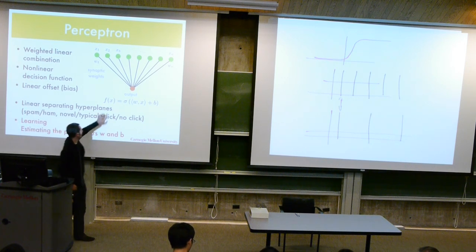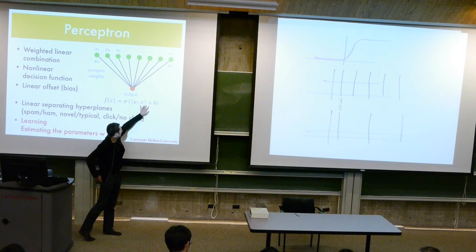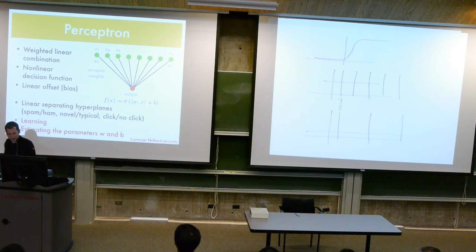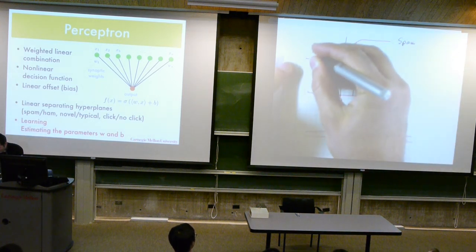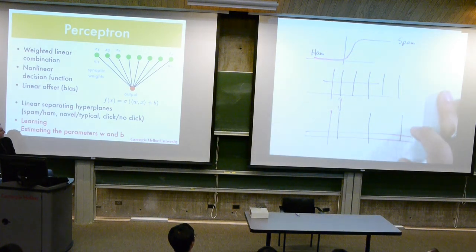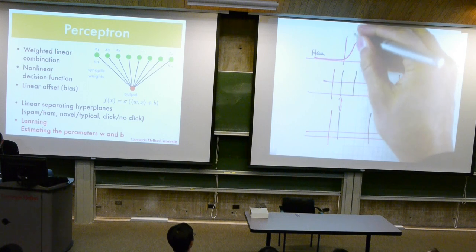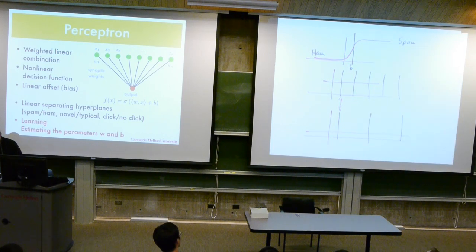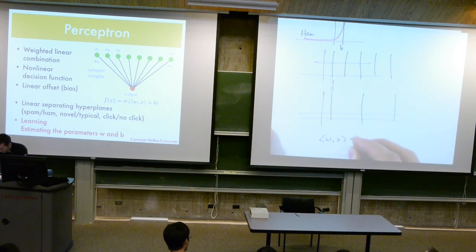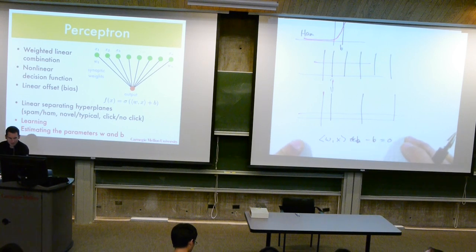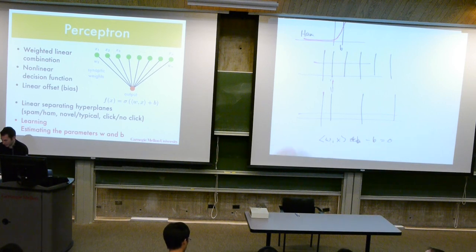What we already saw is that if I have this non-linearity and w·x + b, I can immediately figure out — let's say this is spam and this is ham. With some threshold b, w·x + b − b = 0 specifies a hyperplane. Does somebody have an idea what this w vector does in specifying this hyperplane? It's a normal vector — correct.